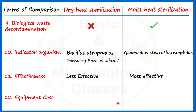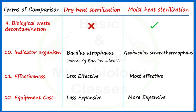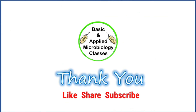The twelfth point of difference is equipment cost. Dry heat sterilization is carried out using a hot air oven, which is less expensive. Moist heat sterilization uses an autoclave, which is more expensive. This cost includes both procurement and maintenance costs. These are the differences between dry heat and moist heat sterilization. Thank you so much, keep watching.